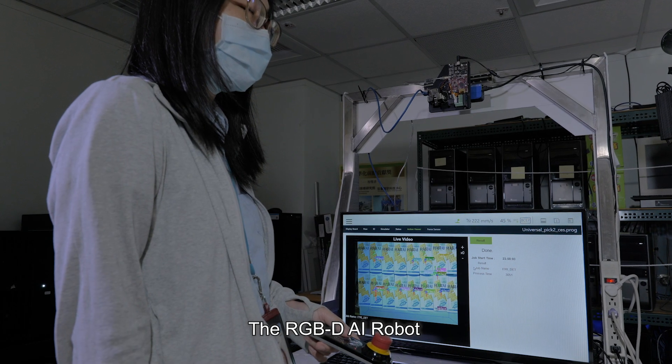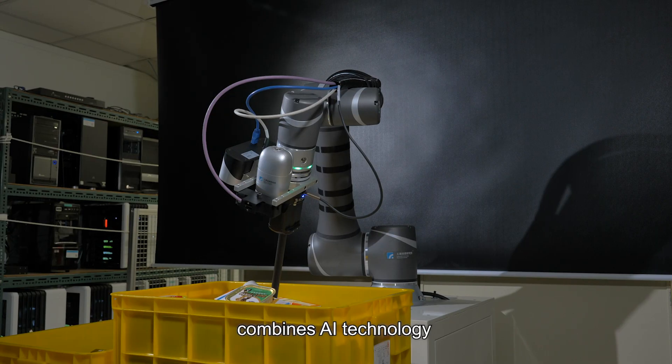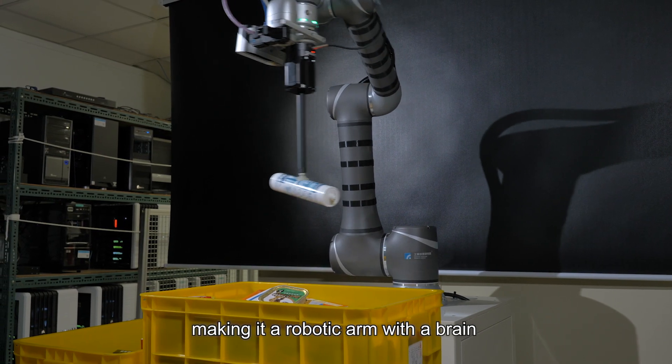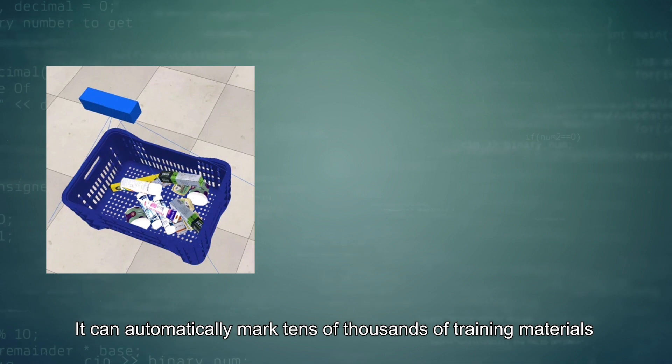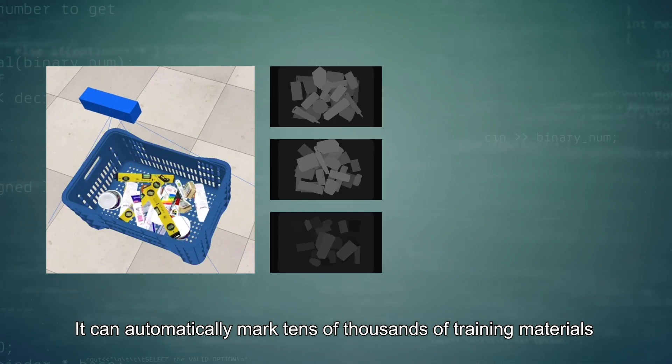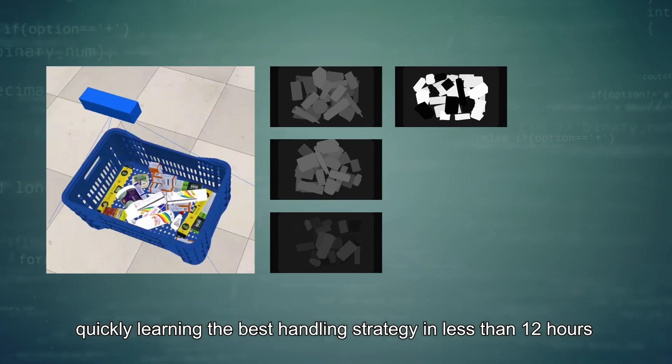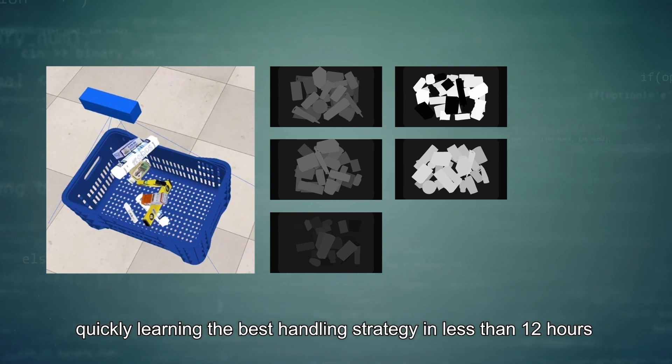The RGBDAI robot, however, combines AI technology, making it a robotic arm with a brain. It can automatically mark tens of thousands of training materials, quickly learning the best handling strategy in less than 12 hours.